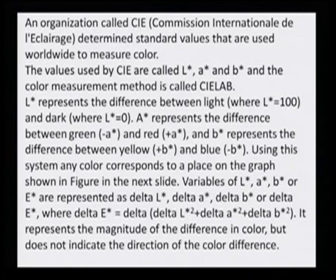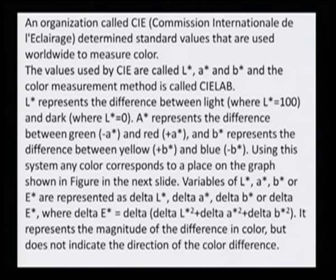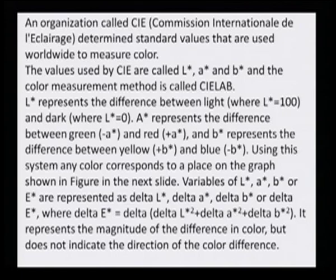Variables of A*, B*, L* are represented by delta L, delta A, and delta B, which indicate the change from the initial situation. Delta L represents how much the L value has changed. These delta values represent the magnitude of difference in color but do not indicate the direction of the color difference — only from what L value something has reduced.